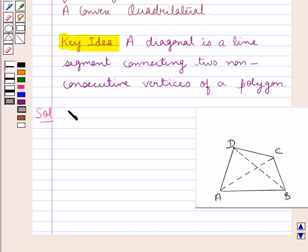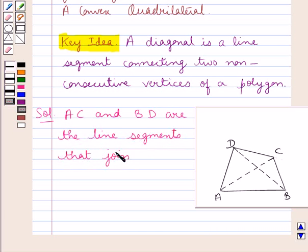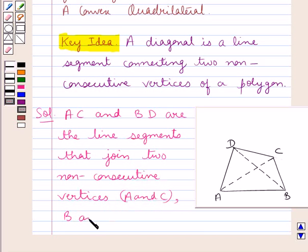Thus we can say AC and BD are the line segments that join two non-consecutive vertices, A and C, and B and D respectively. And we know that a diagonal is a line segment connecting two non-consecutive vertices of a polygon.